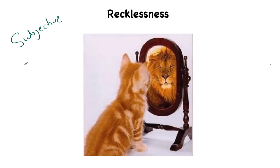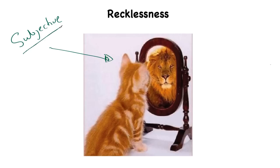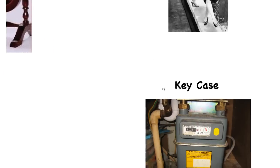I've used a picture here to illustrate this: the cat looks in the mirror and thinks it's a lion. The subjective view of the cat is that it is a lion. The objective view — all of us looking at that photograph who are not the cat — is that it's a cat. So if recklessness is subjective, it means we have to look into the defendant's mind before we can say whether they were reckless. It's not whether the rest of us think their actions were reckless; it's whether the defendant thinks their actions were reckless.